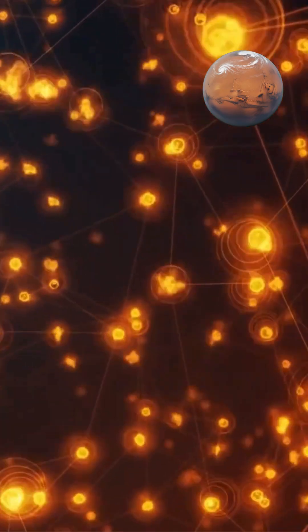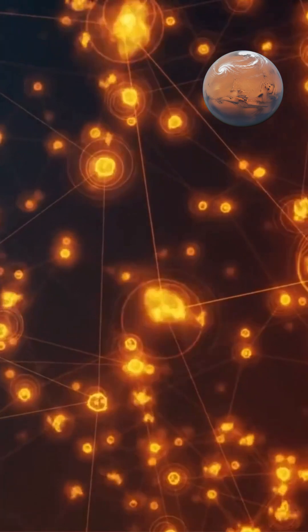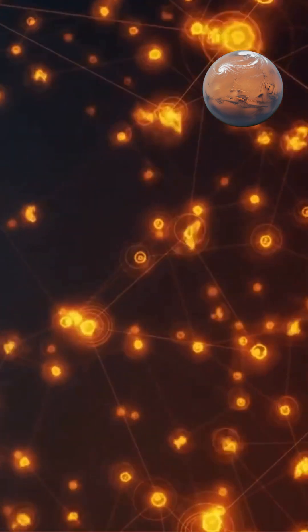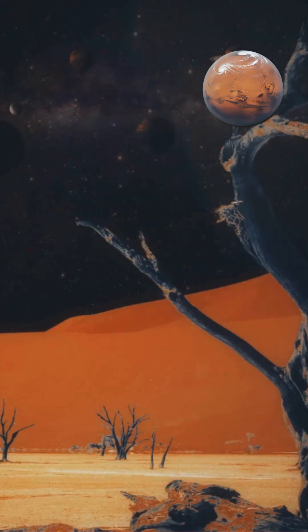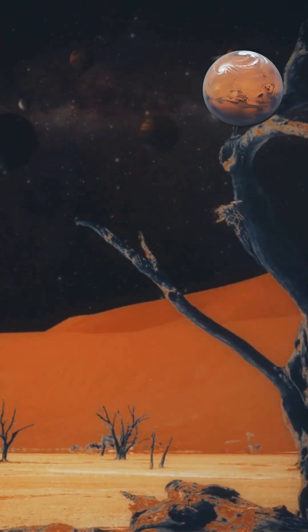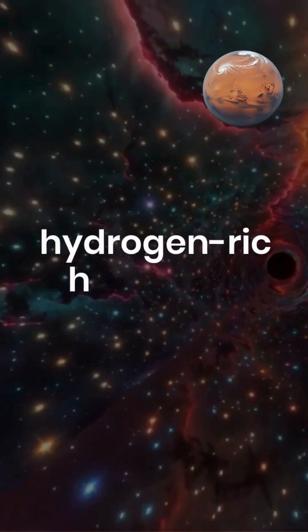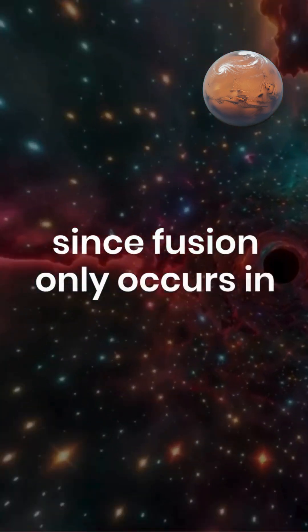The remaining 2% consists of trace amounts of heavier elements like carbon, nitrogen, oxygen, and iron. This composition differs dramatically from the Sun's outer layers, which retain their original hydrogen-rich makeup since fusion only occurs in the core.